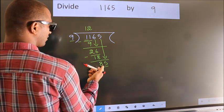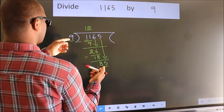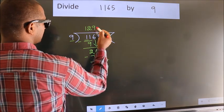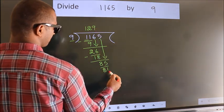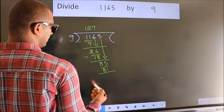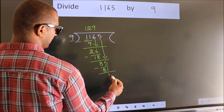A number close to 85 in the 9 table is 9 nines, which is 81. Now we subtract and get 4.